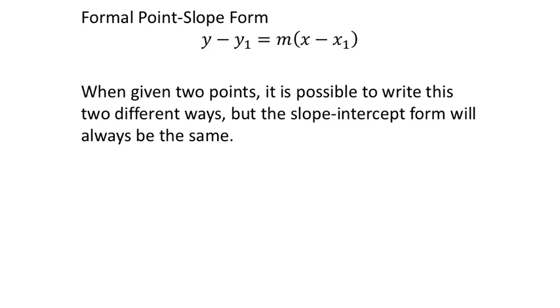So you can see with ordered pairs, you have the x1 and y1. That represents the x value and y value of some ordered pair that they have to give us. Now if you're given two ordered pairs, you just have to choose one of them to use.